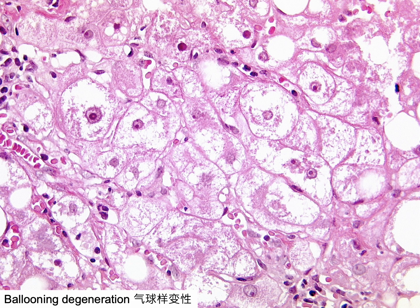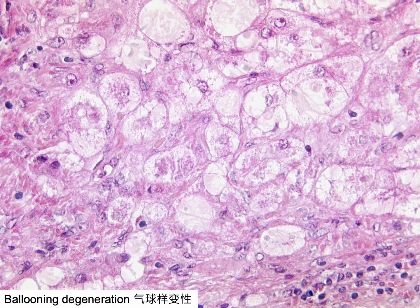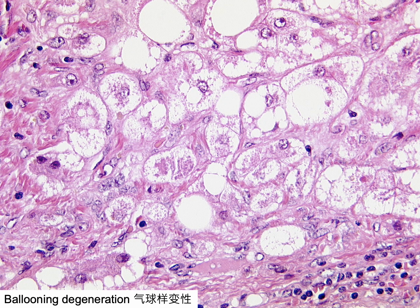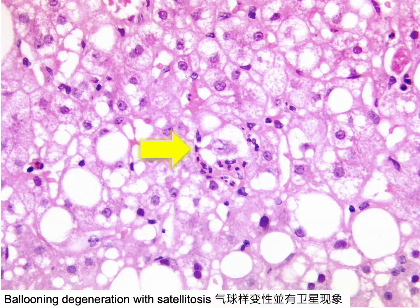Additional examples show prominent and pronounced ballooning degeneration. Satellitosis, where a ballooned hepatocyte is surrounded by neutrophils, is more prevalent in alcoholic steatohepatitis than in non-alcoholic steatohepatitis. This is believed to occur due to the chemotactic effect of Mallory-Denk bodies and/or the local production of chemokines.